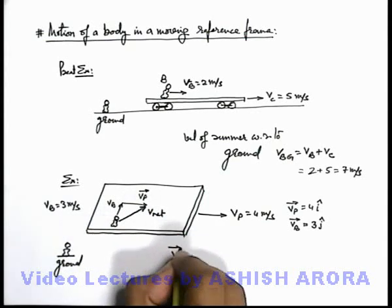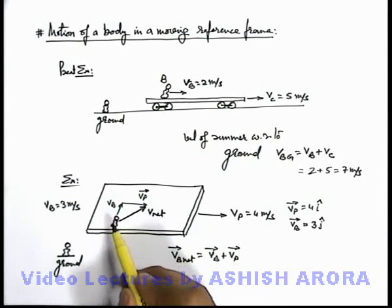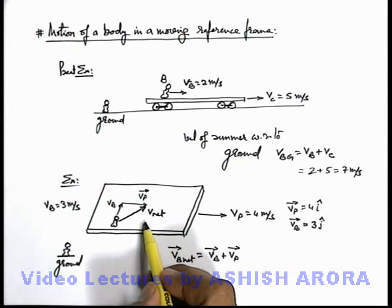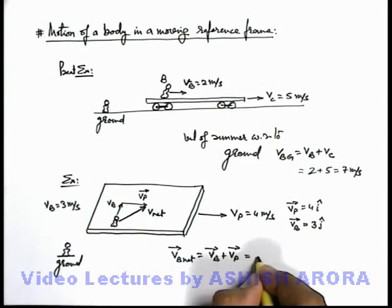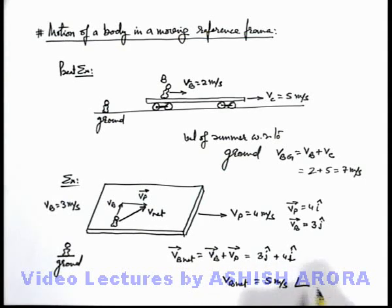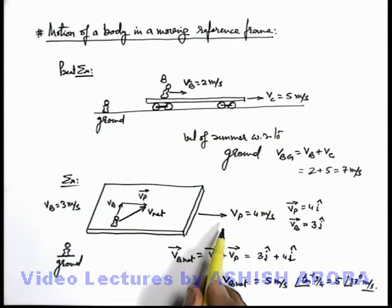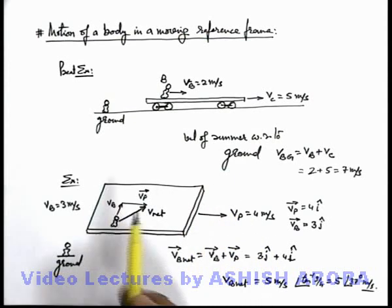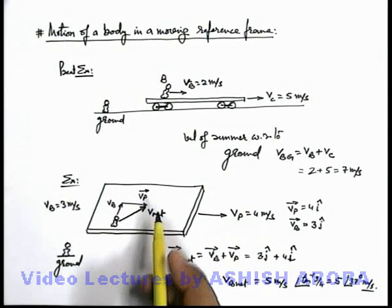The net velocity of the runner, if we wish to calculate, will be v-b plus v-p. In such cases, the velocity of the reference frame is always added to the velocity of the object. So this will simply be 3ĵ plus 4î. In magnitude, the net velocity will be 5 meters per second at an angle — tan inverse of 3 by 4 — so it is 5 meters per second at an angle of 37 degrees with the positive direction of the x axis. Always remember: whenever an object is moving on a reference frame, the velocity of the reference frame is added to the velocity of the object to get the net velocity with respect to ground.